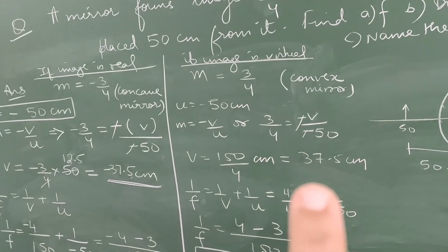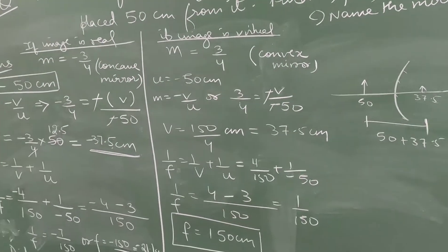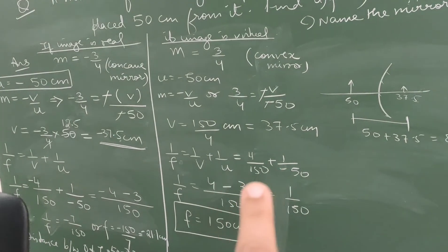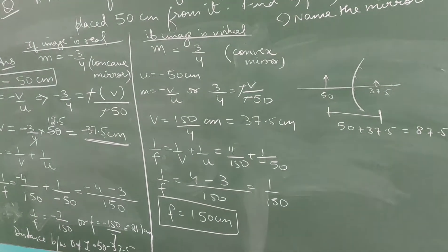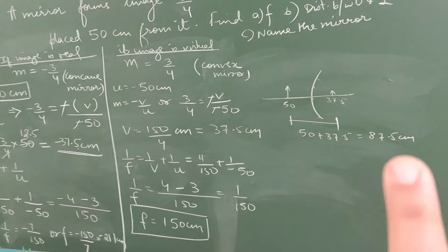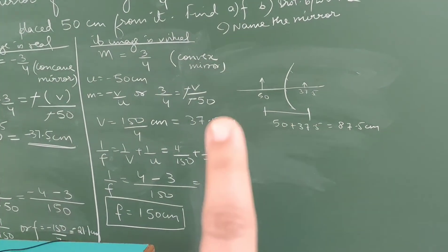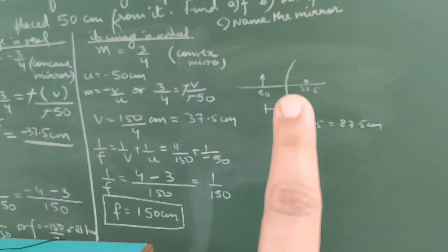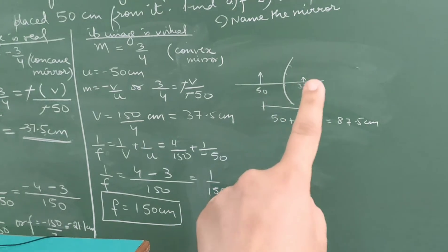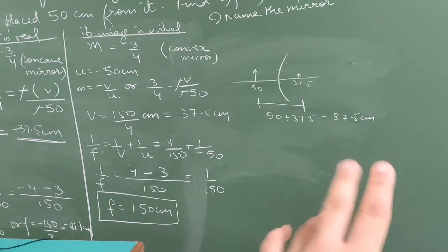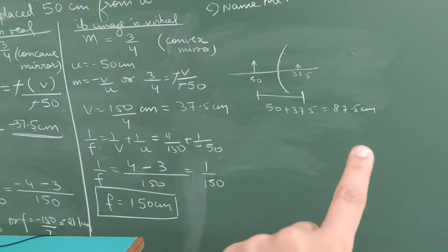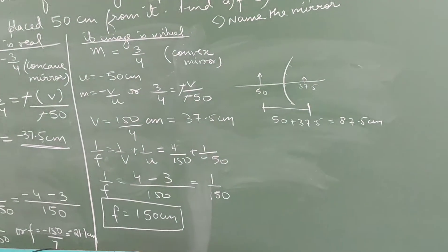For the convex mirror case, focal length comes out to be positive 150 centimeters. For the distance between object and image: object is 50 centimeters in front of the mirror and image is 37.5 centimeters behind the mirror, so we add them: 50 plus 37.5 = 87.5 centimeters.